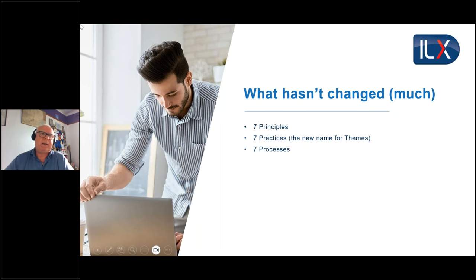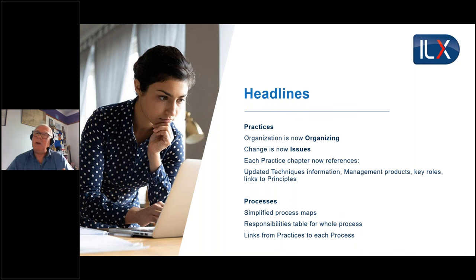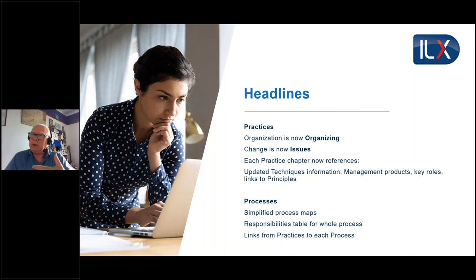Some headline changes: there are still seven practices with some title changes. Business case remains; Organization is now 'Organizing'; then Quality, Plans, Risk. Notably, Risk has been renamed to Issues in PRINCE2 7 - risk is something that may happen, an issue is something that has happened, and a change request is something that has happened and needs to be dealt with. Then there is Progress.